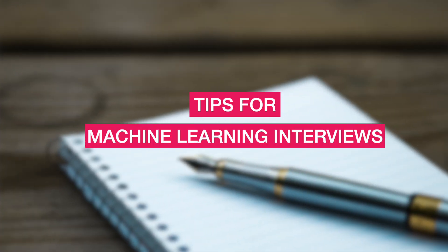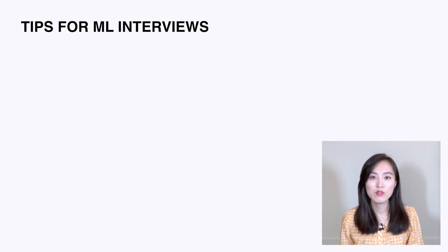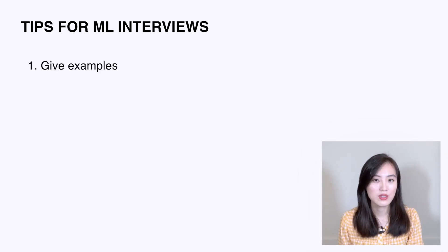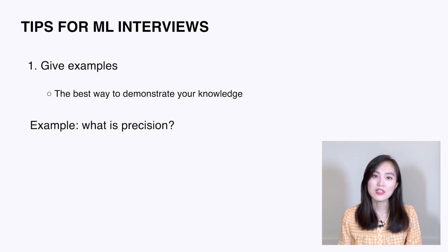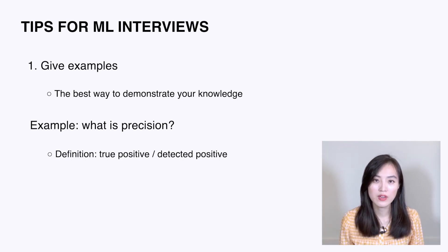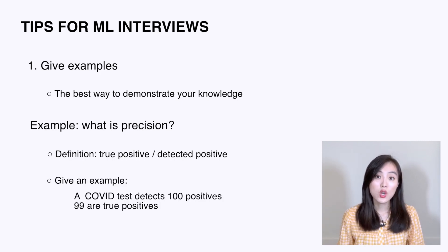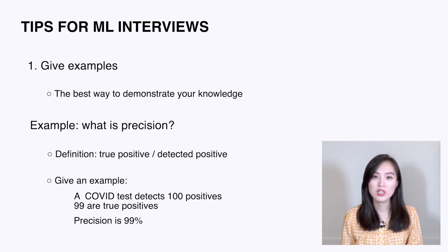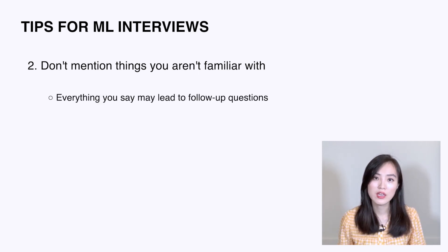Now you know the four kinds of machine learning problems in data science interviews. I want to share two tips. The first is to give examples — providing examples is the best way to show you truly understand a technical term. For instance, if asked to explain precision, give the definition — precision is true positives divided by detected positives — then add an example: a COVID test returning 100 positive cases of which 99 are true positives gives a precision of 99%.